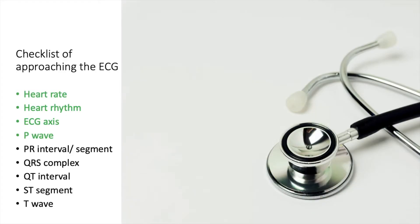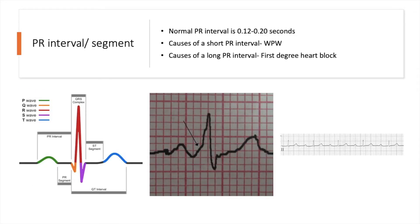So the next thing to look at is the PR interval or the PR segment. This is the time between atrial depolarisation and the start of ventricular depolarisation. There is a difference between the PR interval and the PR segment, and it's perhaps more important and clinically relevant to know the PR interval. The normal PR interval is between 0.12 seconds and 0.2 seconds. So remember that each small square is 0.04 seconds, which means each large square is 0.2 seconds. The normal PR interval should be about one square, but it could be between three to five squares long.